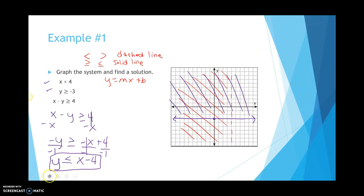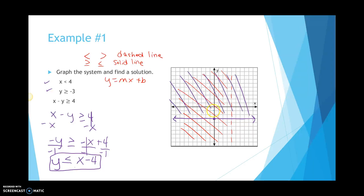So now let's graph y is less than or equal to x minus 4. I'm starting on the y-axis at negative 4, placing a point there. My slope is 1, so I rise 1 and run 1 repeatedly to plot the line. It will be a solid line because the inequality symbol is less than or equal to. It's helpful to use colored markers or crayons to keep track of where the shading is occurring for each inequality.